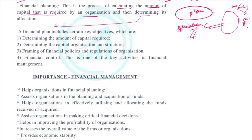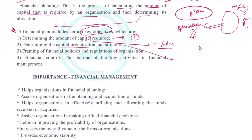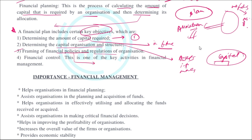The components or objectives of a financial plan are: first, determining the amount of capital required; second, determining the capital structure — since capital takes many forms such as assets, money, and infrastructure; and third, framing financial policies and regulations, which are guidelines that help in the allocation and spending of funds.